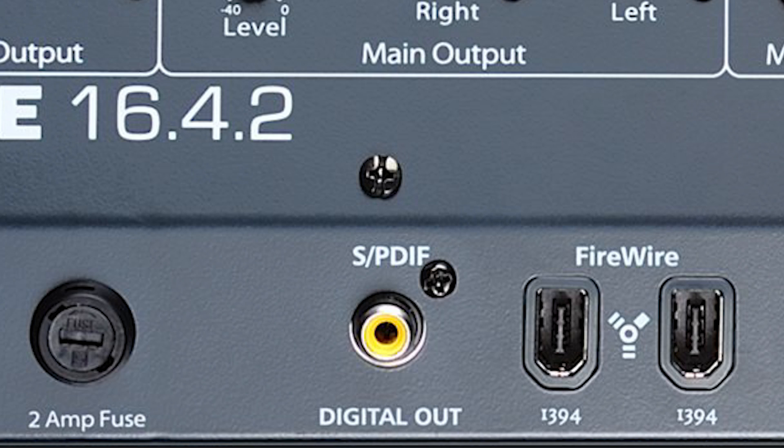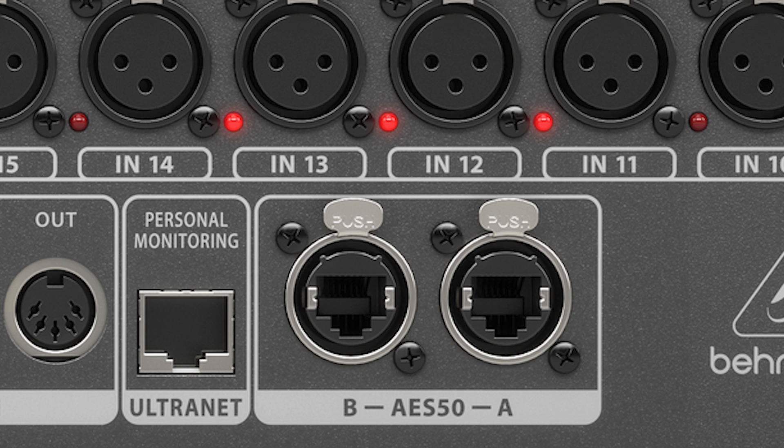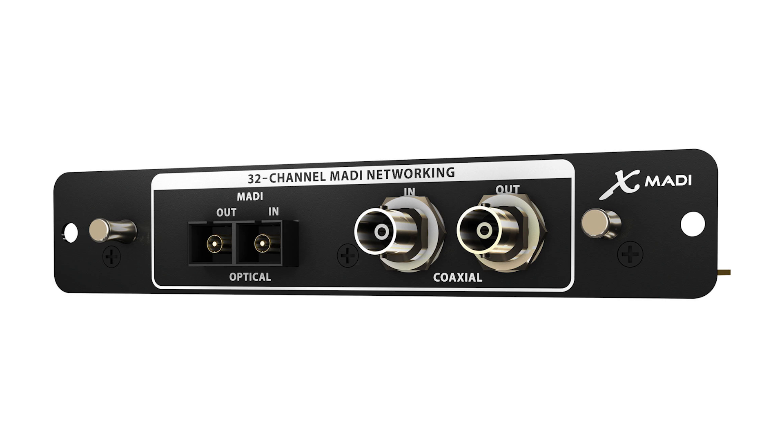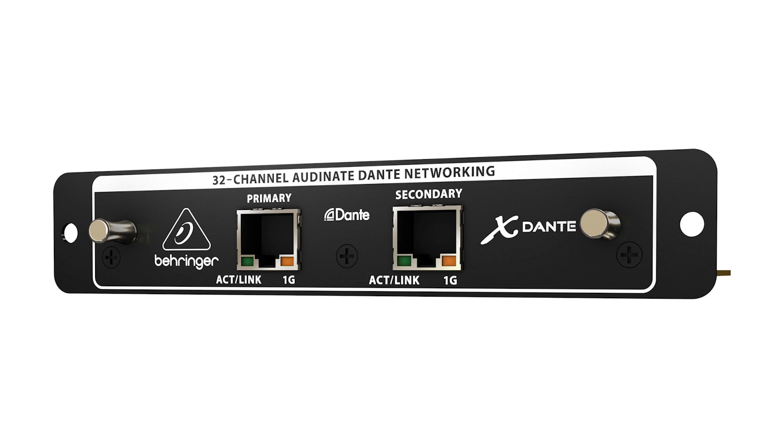Most digital mixers will also include one or more of the following digital output connections: ADAT, SPDIF, AES-EBU, AES-50, MADI, or Dante, which I will cover later in this video. These expansion cards along with other network expansion cards can give you greater flexibility when mixing your live streaming audio. My strong suggestion is to use the USB, Firewire, or one of the digital outputs or digital expansion cards from your mixer if you have them.